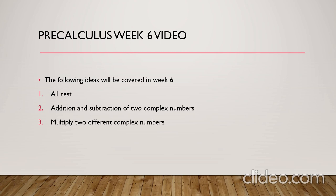Remember that when you multiply the complex parts by each other, you will get i squared. i squared is equal to negative 1. After you finish multiplying, you have to make sure that you collect all the like terms and rewrite the final answer for the multiplication.